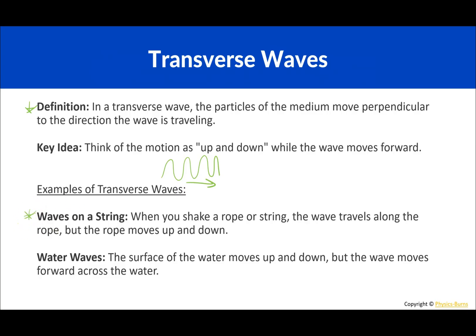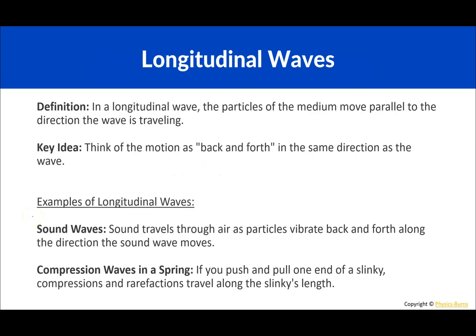Examples of transverse waves: waves on a string — when you shake a rope or string, the wave travels along the rope but the rope moves up and down. Water waves — the surface of the water moves up and down but the wave moves forward across the water.